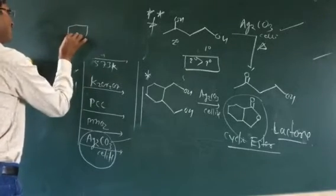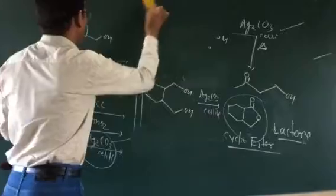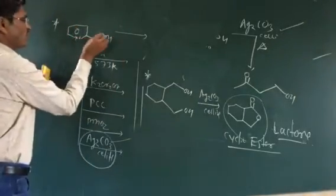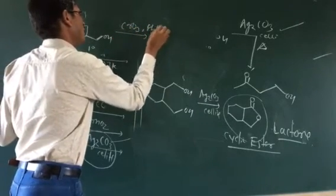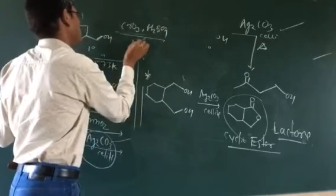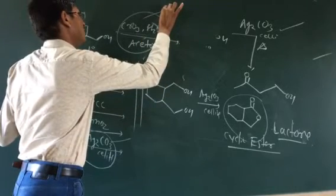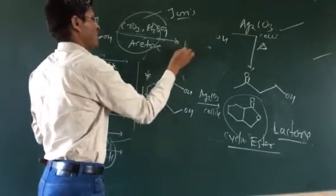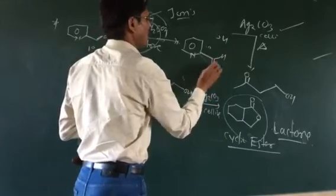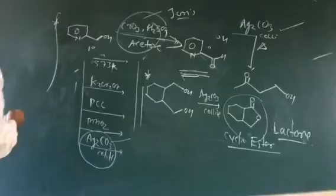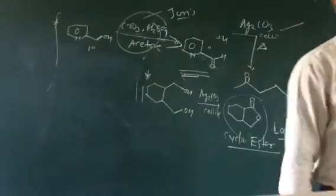Using Jones reagent — chromium trioxide (CrO3) plus H2SO4 — on a pyridine-substituted compound that contains a primary alcohol, the reaction results in oxidation of the primary alcohol. The pyridine ring remains intact, and an aldehyde is formed. This is one of the preparation methods for aldehydes and ketones starting from primary and secondary alcohols using oxidizing reagents.